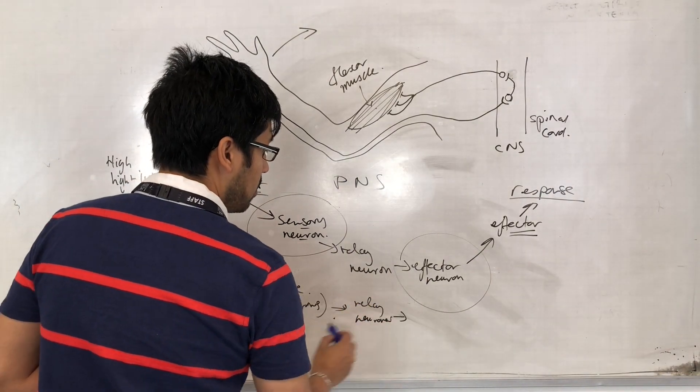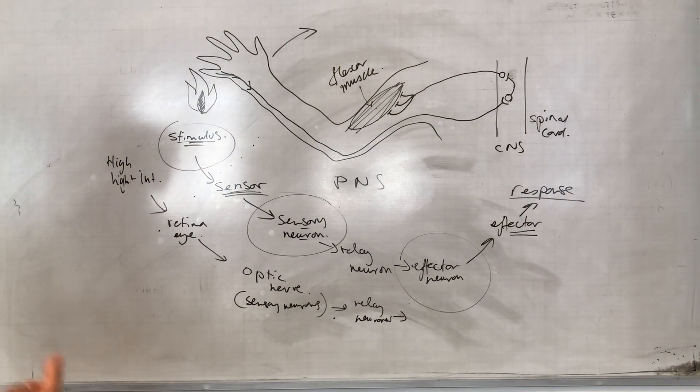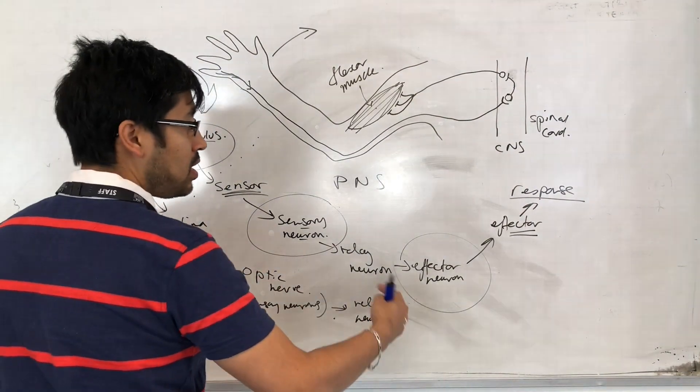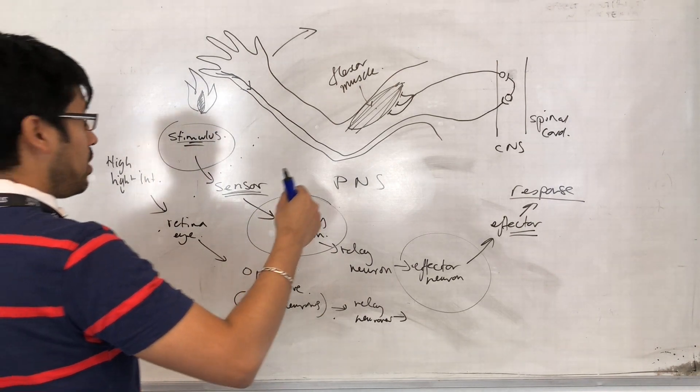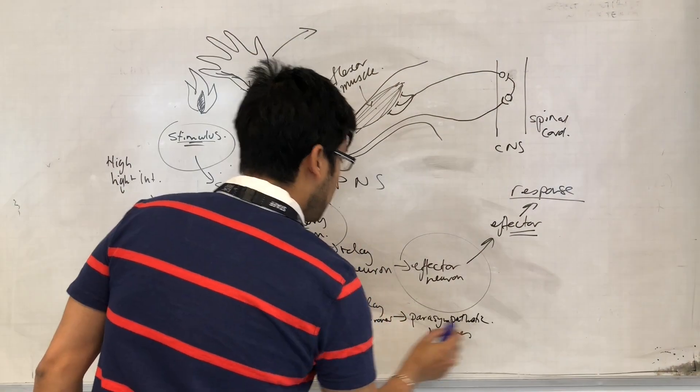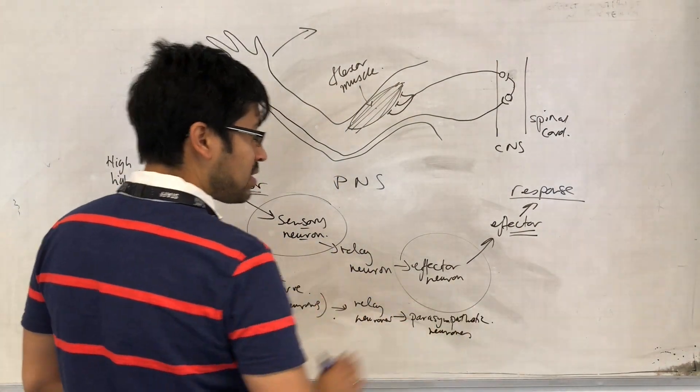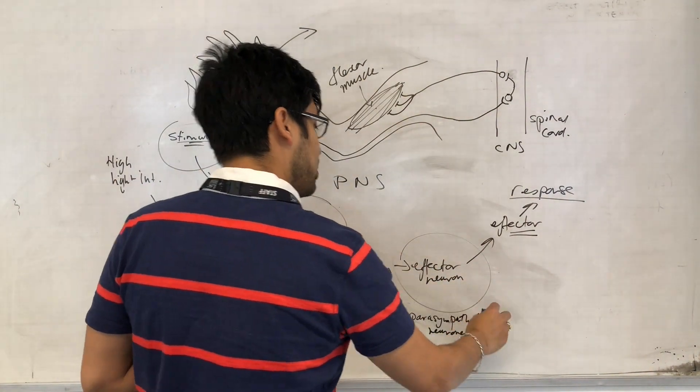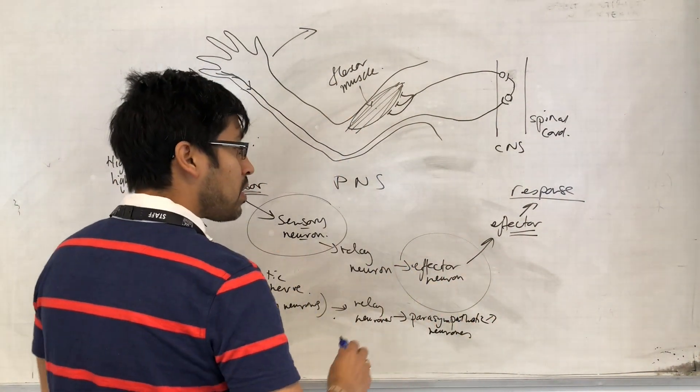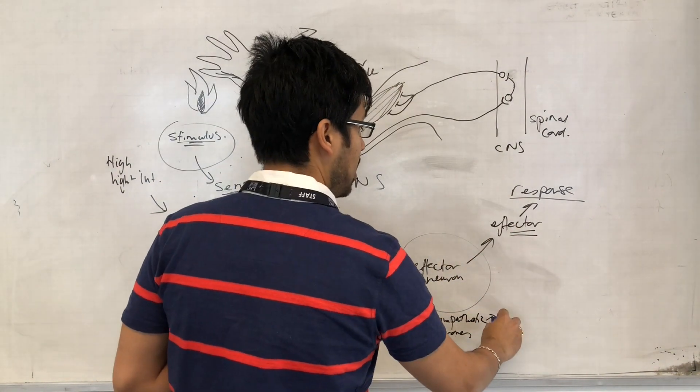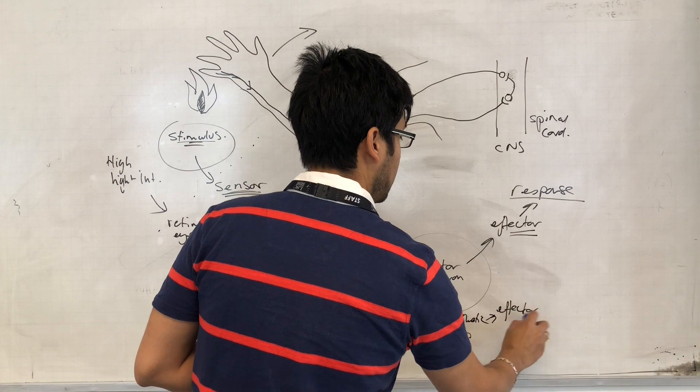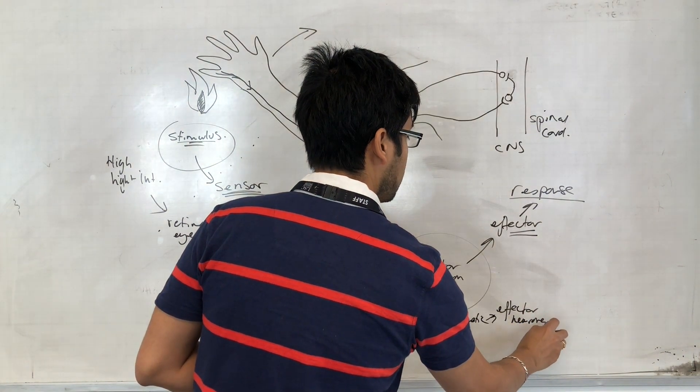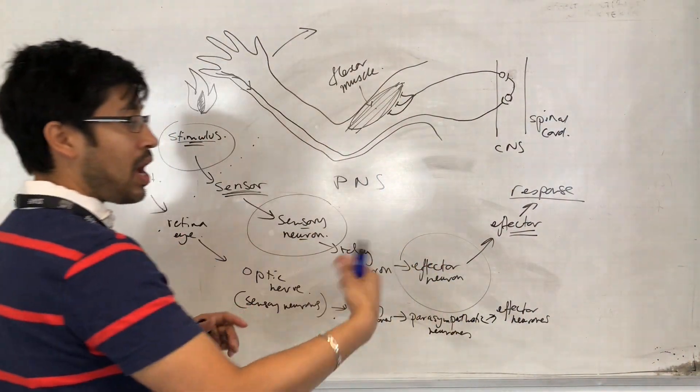But then, the impulses are generated because of that in the effector, in the parasympathetic neurons. So impulses move along the parasympathetic neurons. The impulses from the parasympathetic neurons result in the effector neuron to have impulses.